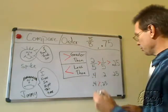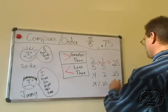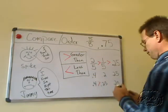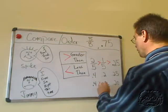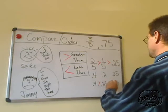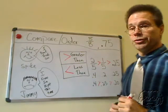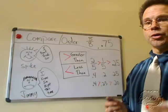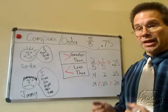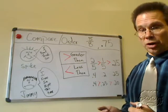Our last number is 0.2. And the symbol we're going to use again is the greater than symbol. 0.25 is greater than 0.2. So now our decimals are in order from largest to smallest.